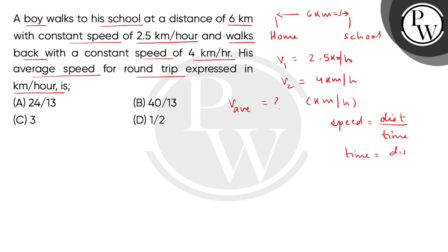So children, if we check the time for the first journey, T1 equals 6 km divided by 2.5. So this will be in hours.